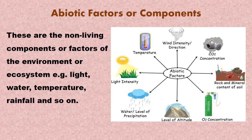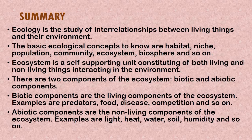The soil — the rock and minerals that make up the soil — is very essential because plants derive nutrients from the soil to grow. Carbon dioxide concentration is also very important because plants use carbon dioxide to produce food and in turn give off oxygen for animals to respire. Wind direction and intensity is also an abiotic factor in the environment.